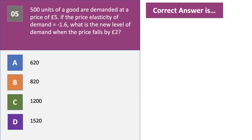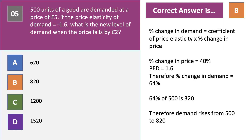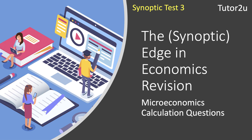The elasticity is 1.6, which is elastic (greater than one). Therefore the change in demand will be 1.6 times 40% equals 64%. Demand will go up by 64%. 64% of 500 is 320, so originally selling 500 the new level of demand will be 820. There we go — five microeconomics multiple choice revision questions. Hope you did well on that test.